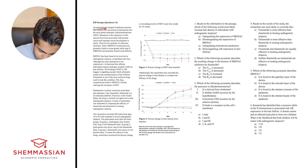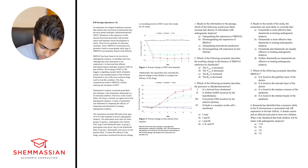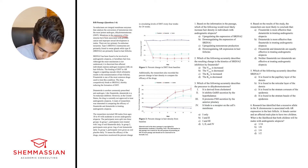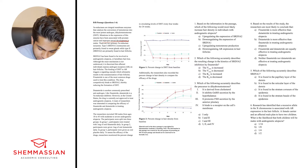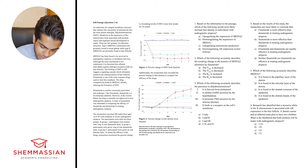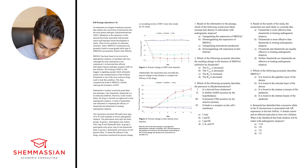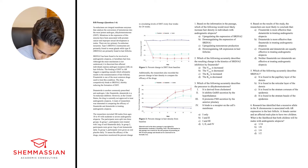5-alpha reductases are integral membrane enzymes that catalyze the conversion of testosterone into the more potent androgen, dihydrotestosterone, or DHT. Mutations in the expression of this enzyme have been associated with prostate cancer and improper sexual development in males. There are two primary 5-alpha reductase isozymes. Type 1 or SRD5A1 are primarily found in sweat glands, while type 2 or SRD5A2 are primarily found in hair follicles.